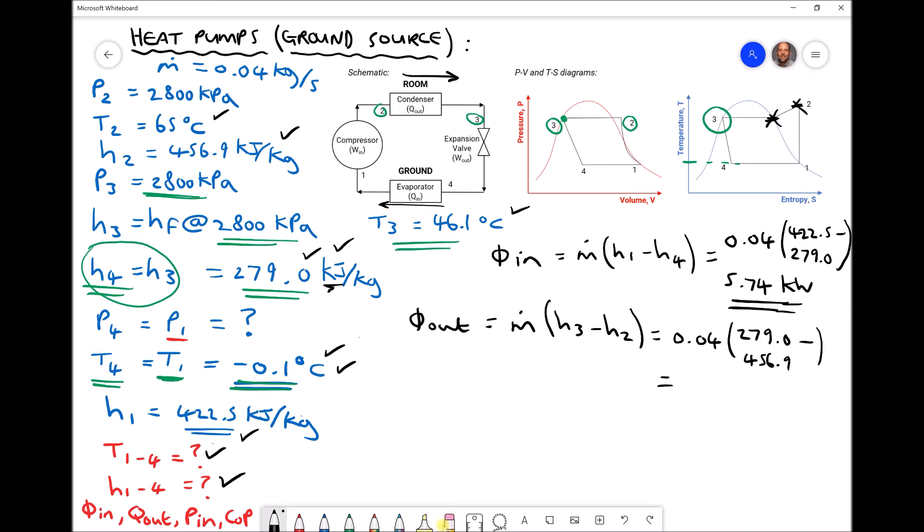So we have the mass flow rate, giving us a phi out, or the rate of heat energy entering the room and leaving the vapor, equal to minus 7.12 kilowatts.